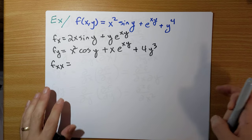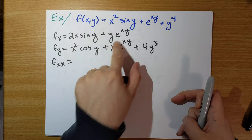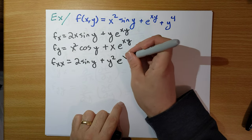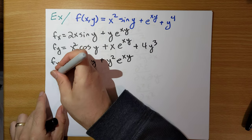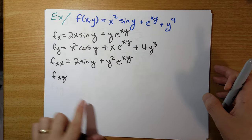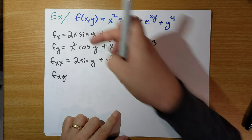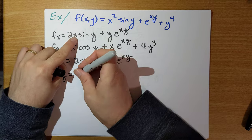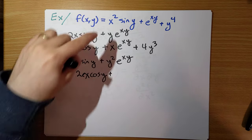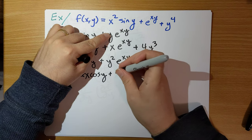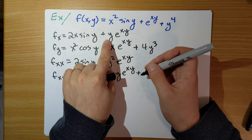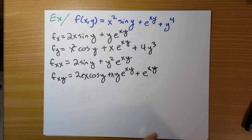f sub xx takes two derivatives with respect to x. When we take a derivative of f_x with respect to x, we get 2 sin(y) plus another factor of y comes down: y²·e^(xy). Next up is f sub xy, which says take the derivative with respect to x first and then with respect to y. Taking the derivative with respect to y gives 2x·cos(y). Then using the product rule: y times the derivative with respect to y gives x·e^(xy), plus e^(xy) times the partial derivative of y with respect to y, which is just 1.